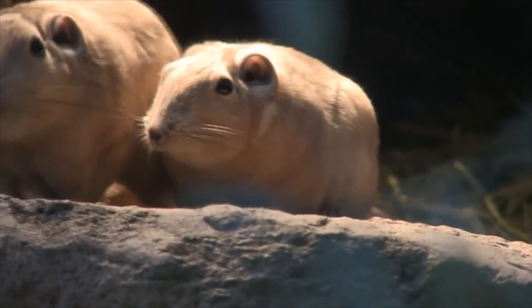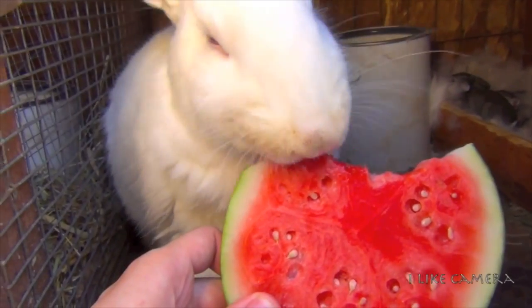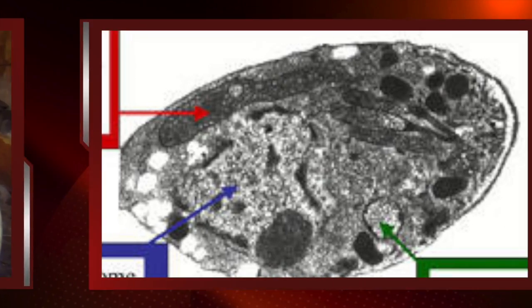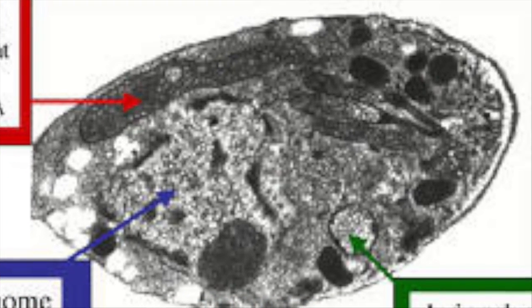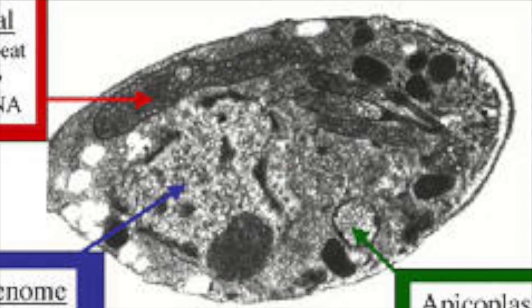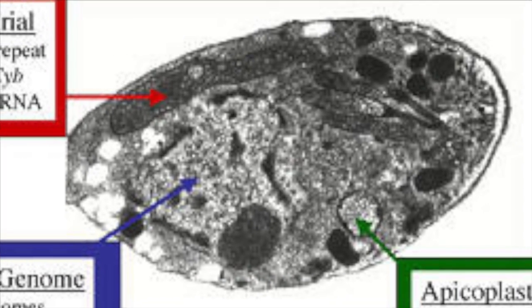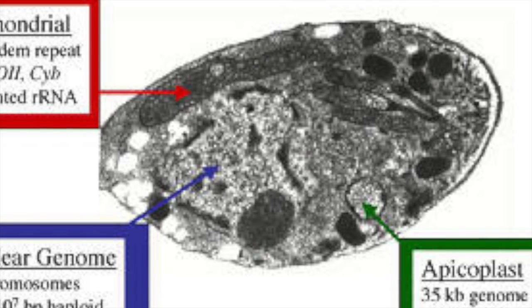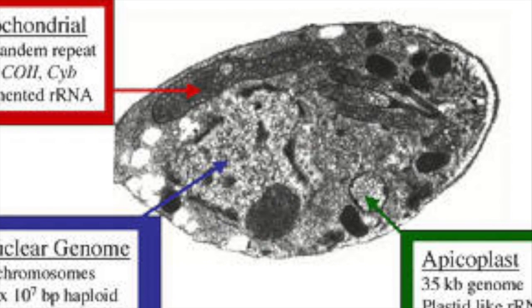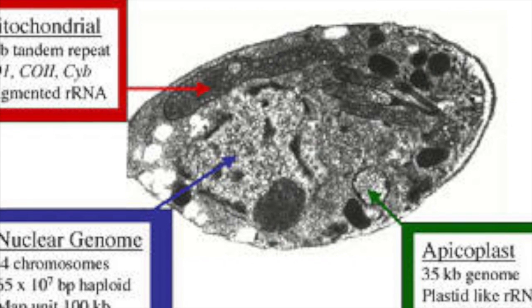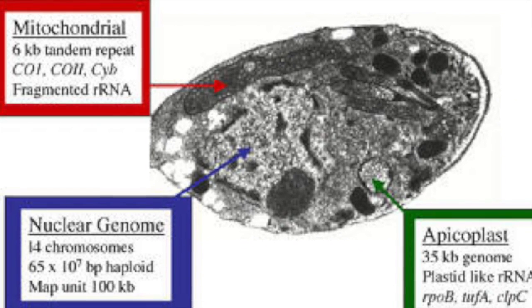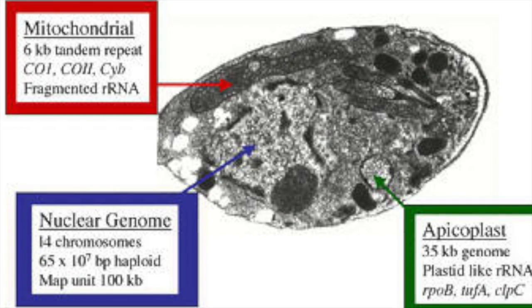Interestingly, it was discovered by another researcher the same year in a rabbit in Brazil. Toxo has remained largely mysterious. In 2005, its genome was mapped and will hopefully be of aid in determining why some people develop Toxoplasmosis and others do not.